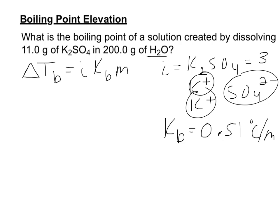Delta T sub B is a change in temperature, and specifically a change in boiling point, from your normal solvent to your elevated boiling point of your solution. Molality is equal to your moles of solute divided by your kilograms of your solvent.